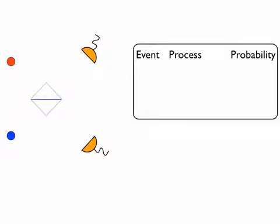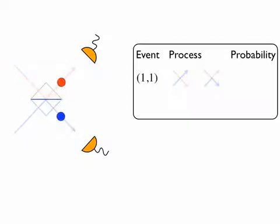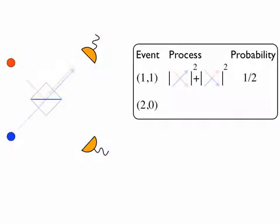To find exactly one particle in each output mode, both particles need to be transmitted or reflected. The probabilities of these distinguishable processes are added. To find two particles in one mode, one particle is reflected and the other is transmitted.